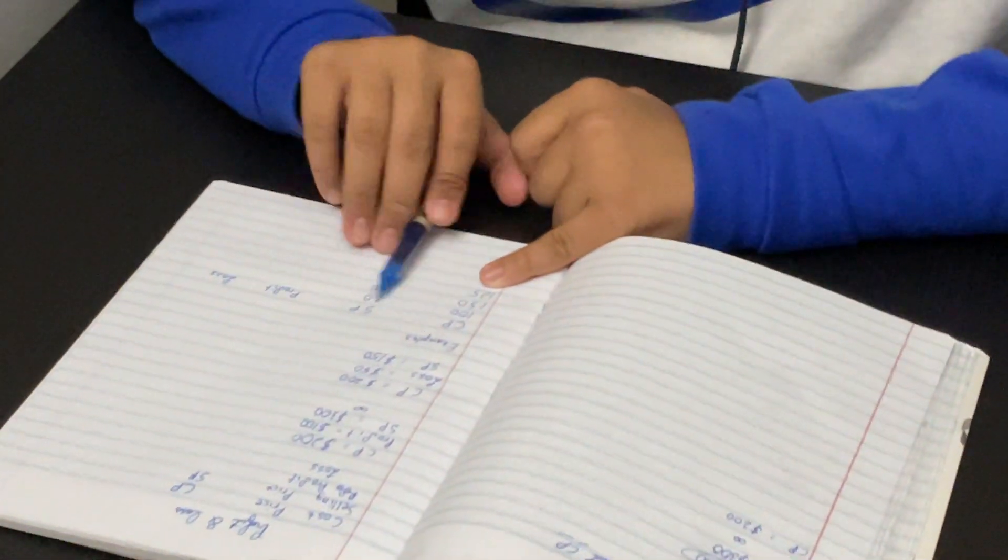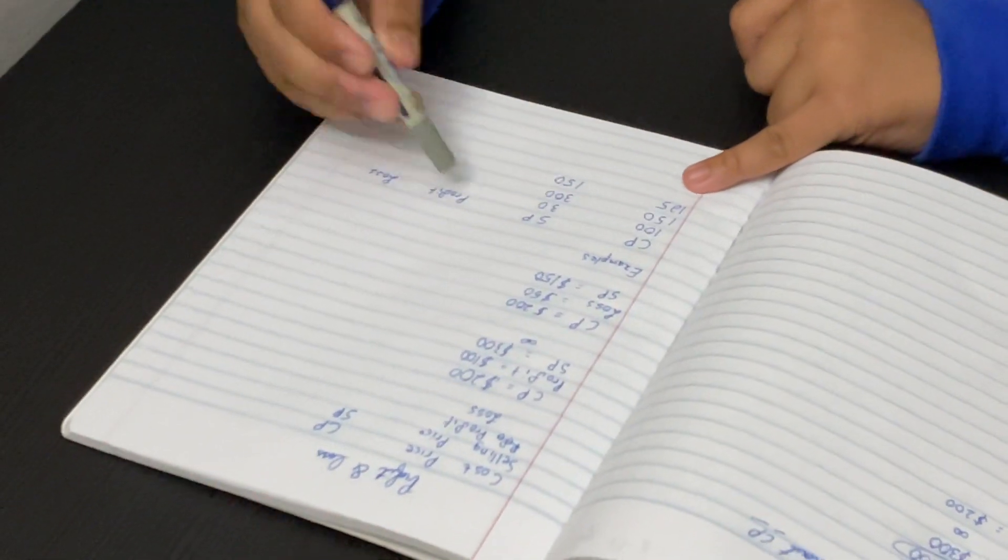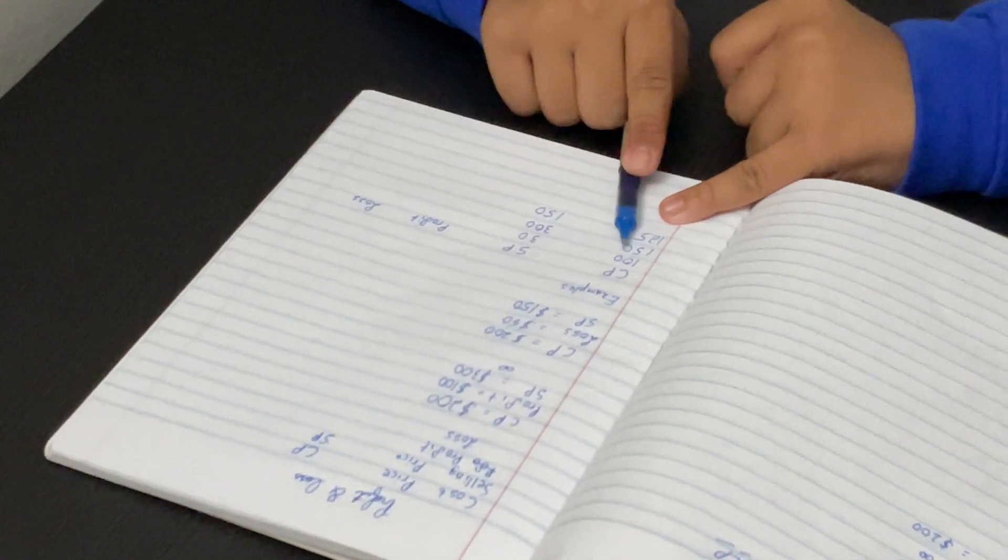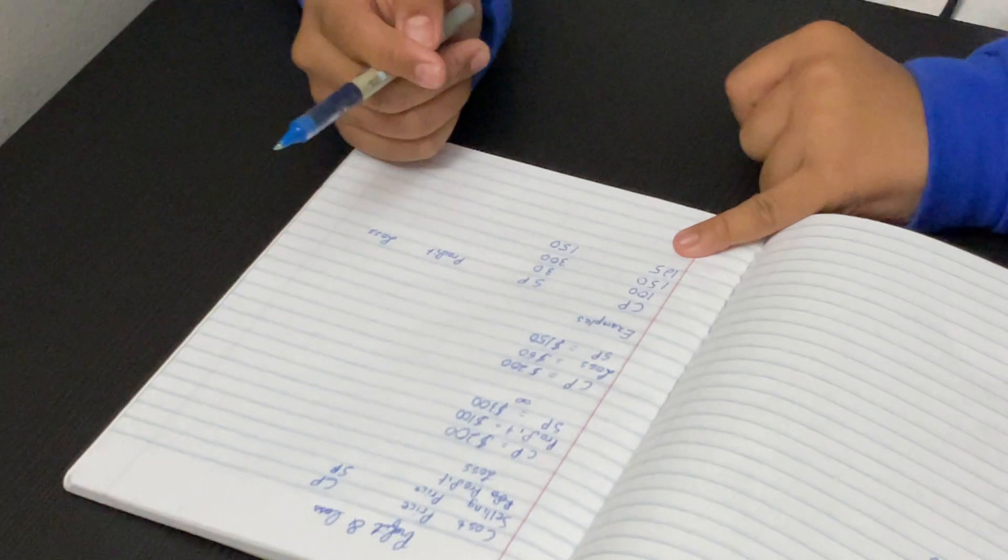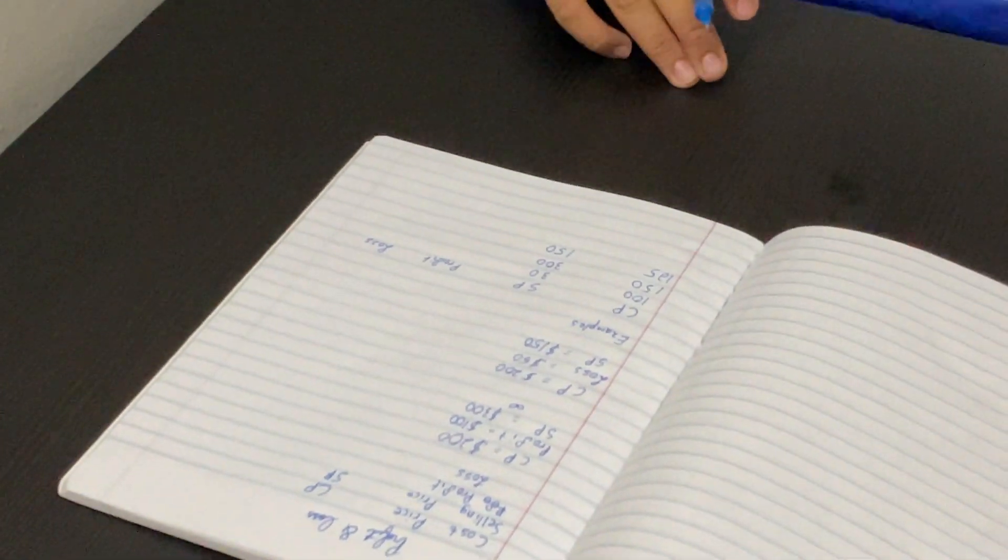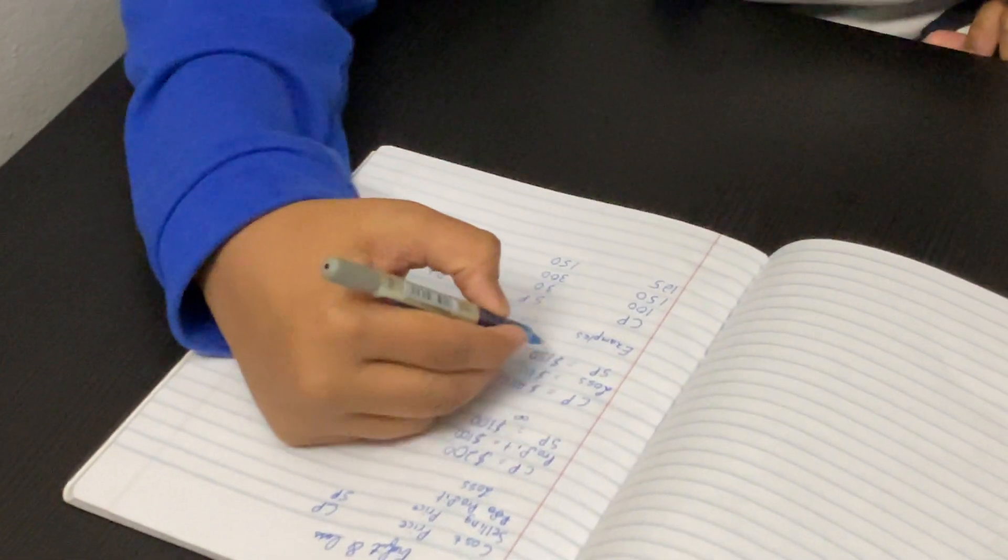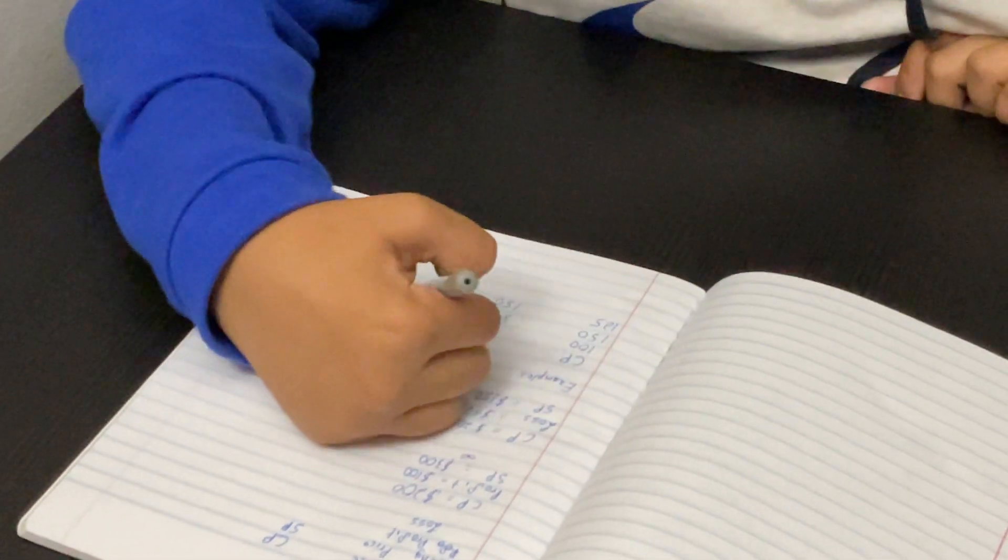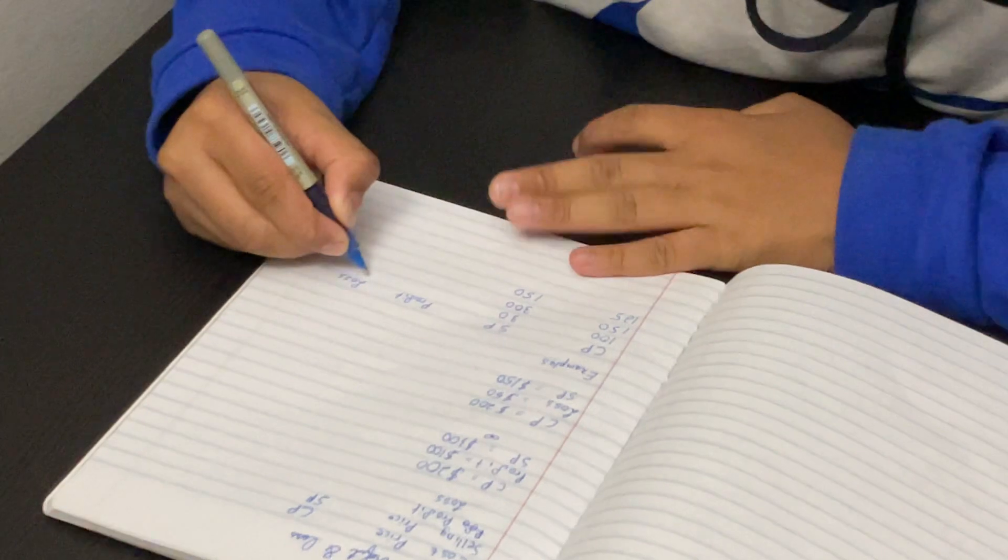I have three examples here. They have given us cost price and selling price, so that means we have to find the profit or loss, if there is any. We have to find which is bigger. Cost price is bigger than selling price in this case, because $100 is more than $30. My cost price is more than my selling price, meaning it's going to be a loss. So, $100 minus $30 is $70, that would be a $70 loss.